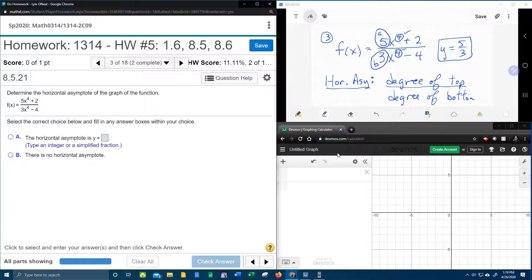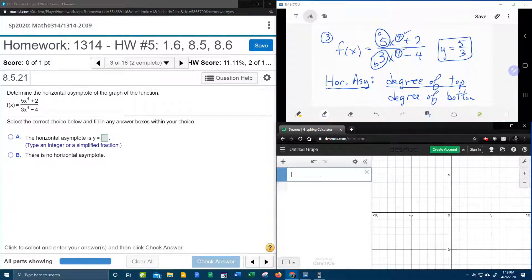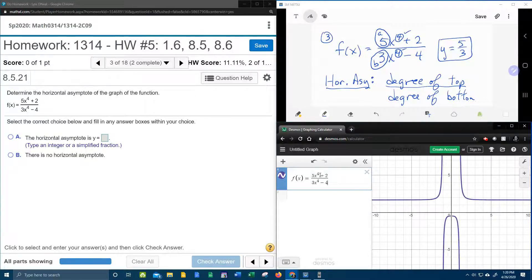So what I'm going to do is use Desmos down here to check and see if that's right. So we're going to input our function. We have 5x to the fourth plus 2. And in the bottom, we have 3x to the fourth minus 4.